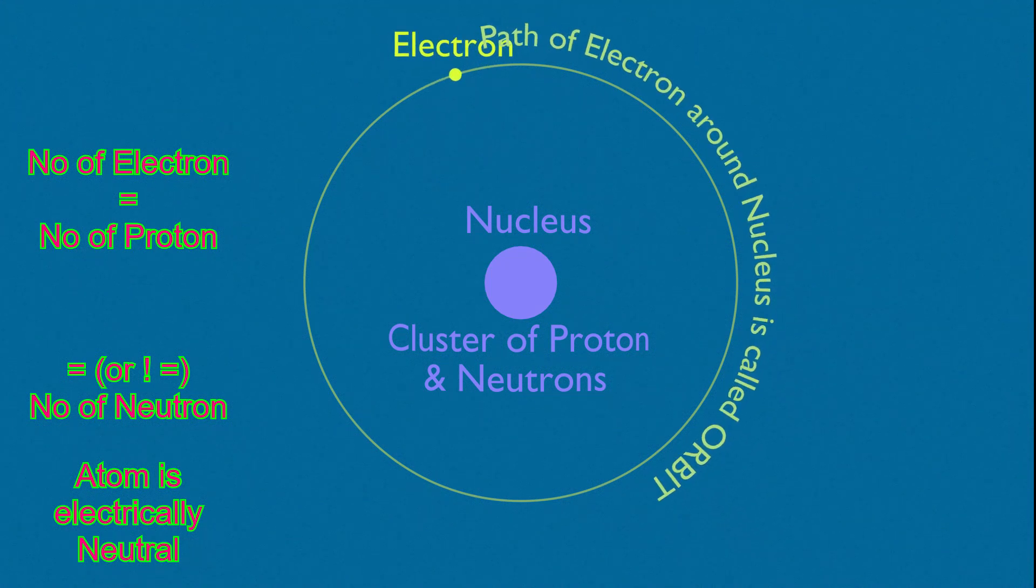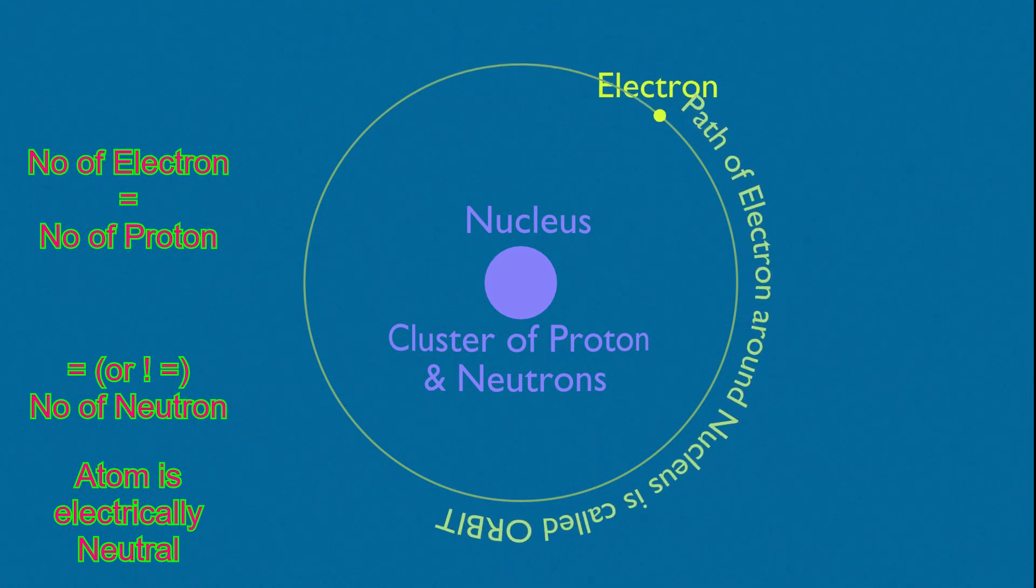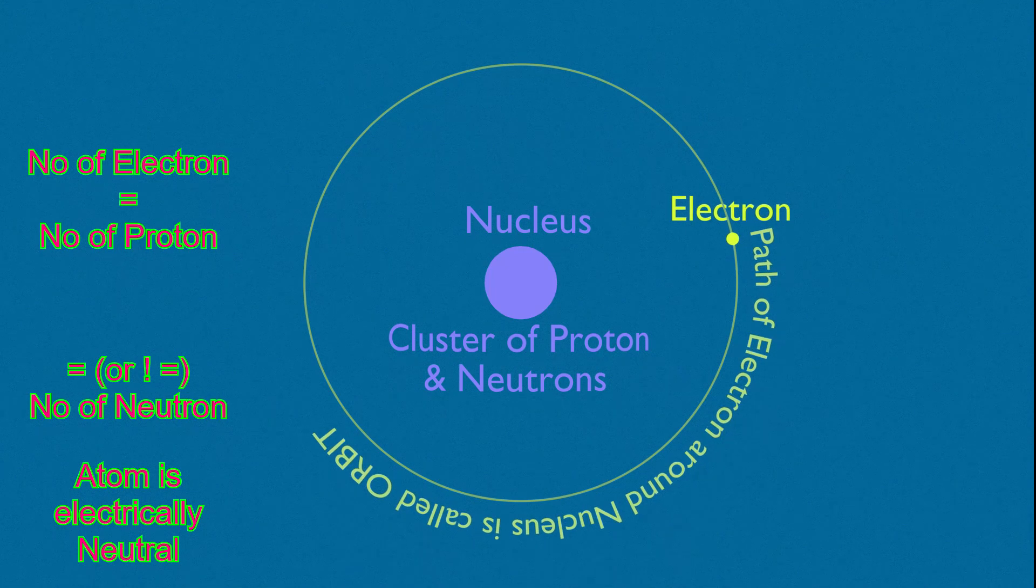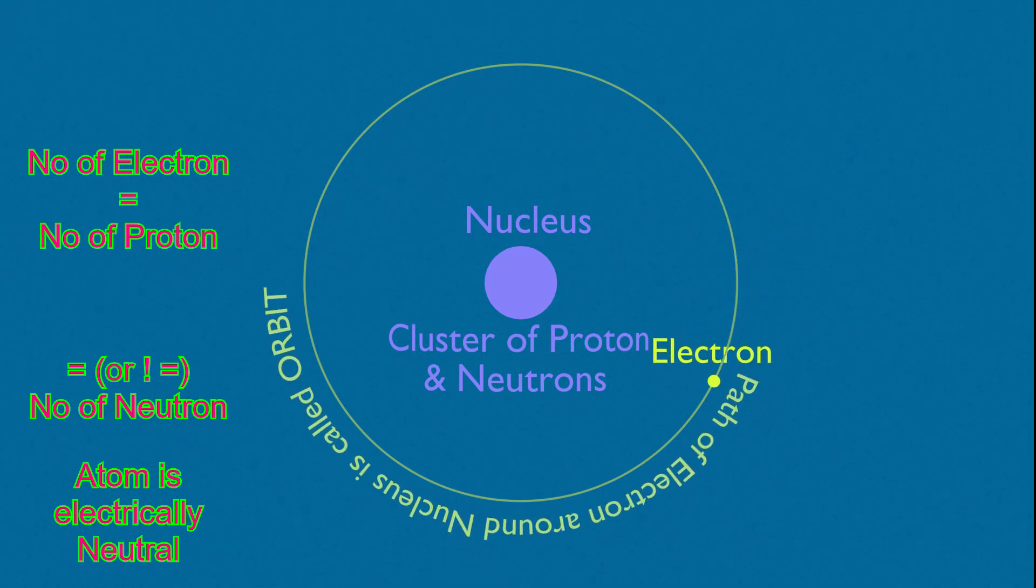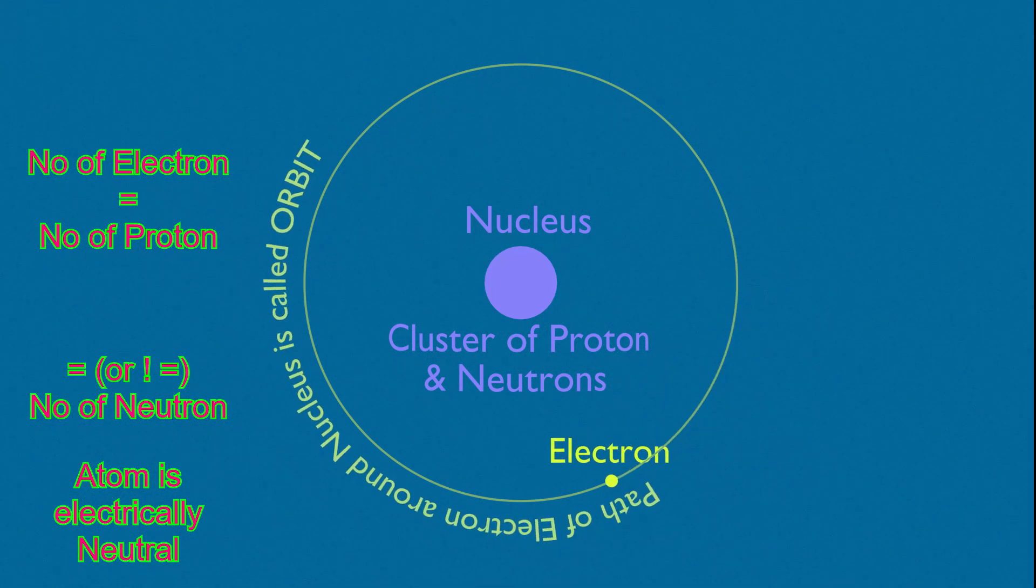Total charge inside an atom is always zero, because the positive charge of proton and negative charge of electron always cancel out, while the neutron doesn't have any electrical charge in it.